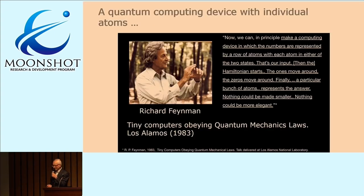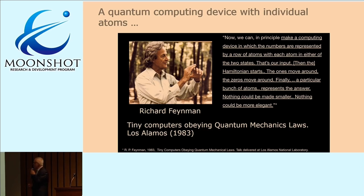This is a very surprising quote from 1983 by Richard Feynman, where he says, now we can, in principle, make a computing device in which the numbers are presented by a row of atoms with each atom in either of two states. That's our input. Then the Hamiltonian starts. The ones move around, the zeros move around. Finally, a particular bunch of atoms represents the answer. Nothing could be made smaller. Nothing could be more elegant.